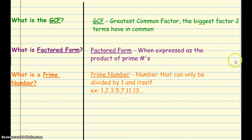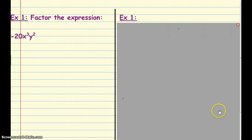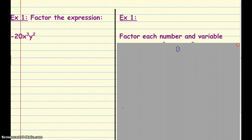So knowing those three terms, let's take a look at our first example. In example one, we're going to factor this expression, negative 20x³y². The first thing that we're going to do is factor each number and variable. What do we mean by factor? We're going to break it down as a product of numbers. So we're going to split them up into three little mini problems because there's three parts to this. We're going to split it up as negative 20, x³, and y².